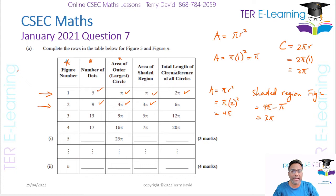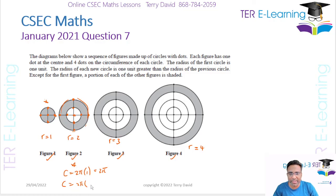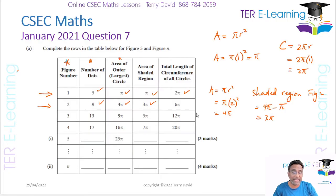For the total circumference of all circles in figure two, there are two circles. The circumference of the first is 2π × 1 = 2π, and the circumference of the larger circle is 2π × 2 = 4π. Adding those together gives 6π — that's where the 6π in the table came from.